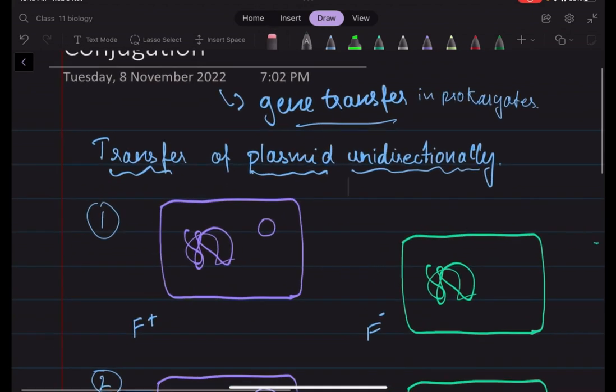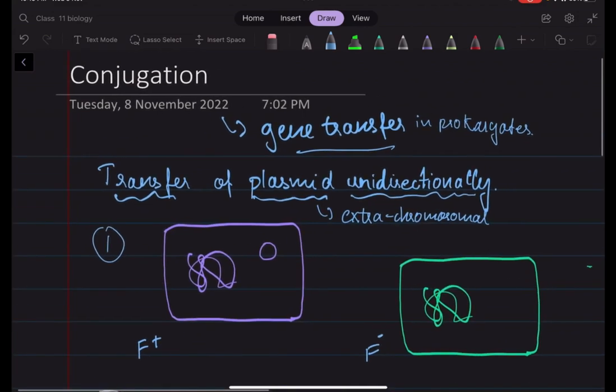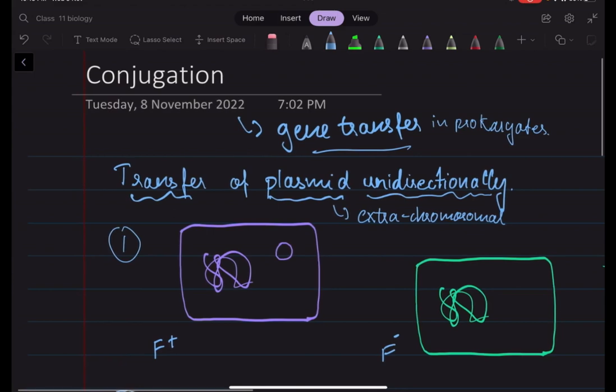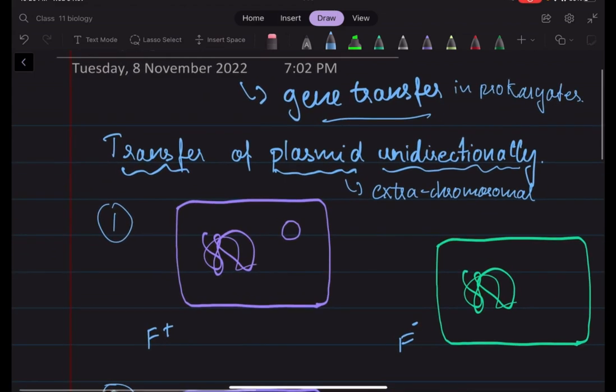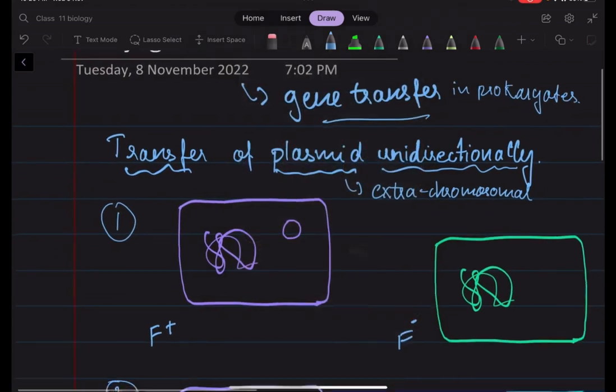We know that plasmids are extra-chromosomal DNA. They infer special properties to the bacteria, like resistance to antibiotics or able to develop a special organelle. So in this case, we have a special plasmid called the F-plasmid.